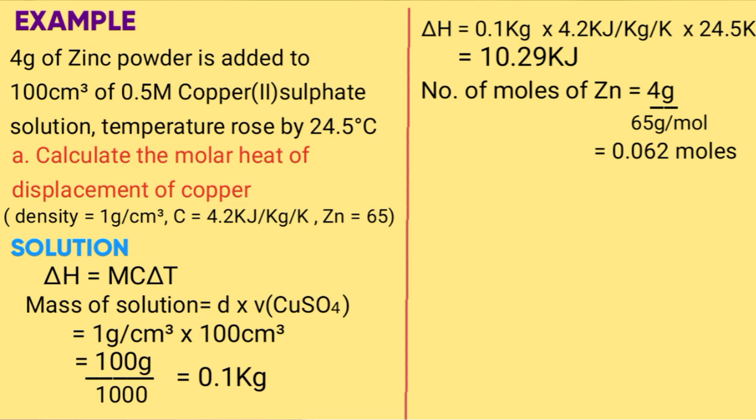The number of moles of copper sulfate is molarity times volume over 1000, which is 0.5 times 100 over 1000. That gives us 0.05 moles.